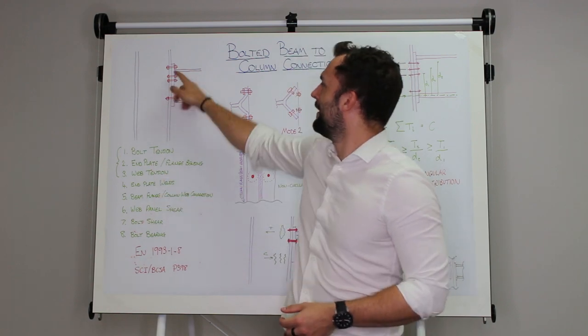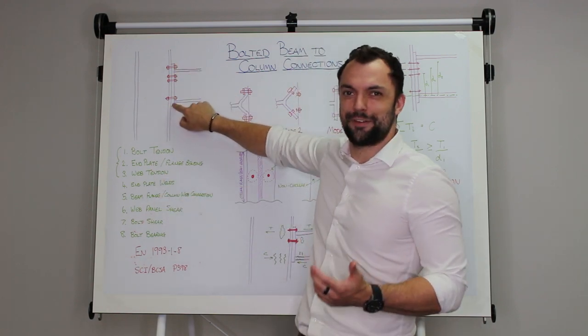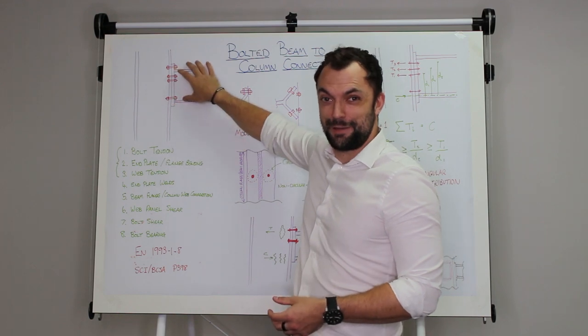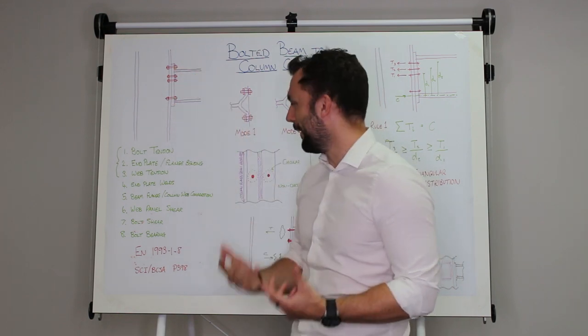The end plate welds are important because there's no point bolting that end plate to the column and that plate staying there if the rest of the beam that's attached to it falls away because the welds fail.